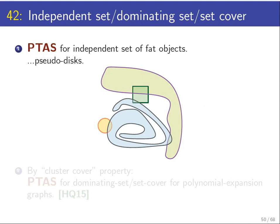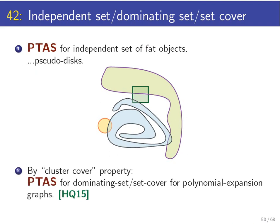We can get a PTAS for independent sets of fat objects. It turns out this works in more general cases. For example, when the objects are pseudo-disks—regions where a set of regions of the plane are pseudo-disks if the boundary of every pair of them intersect in at most two points. They combinatorially behave like disks.